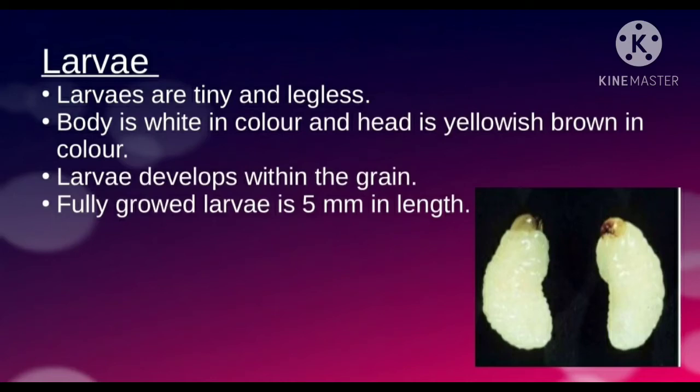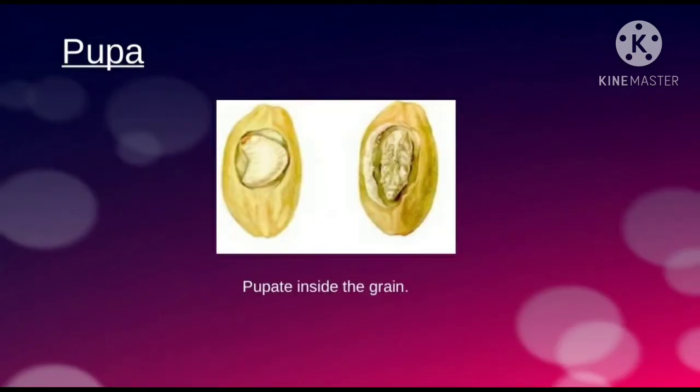Larvae are tiny and legless. The larval body is white in color and the head is yellowish brown. Larvae develop within the grain. Fully grown larvae are 5 millimeters in length. They are plump or fleshy in texture and pupate inside the grain after three or four weeks.